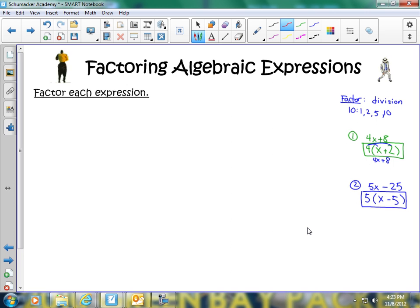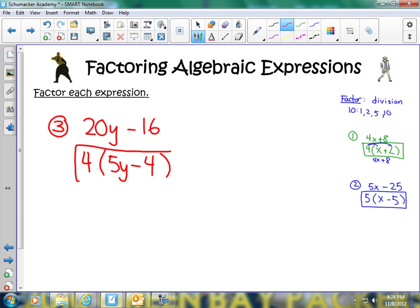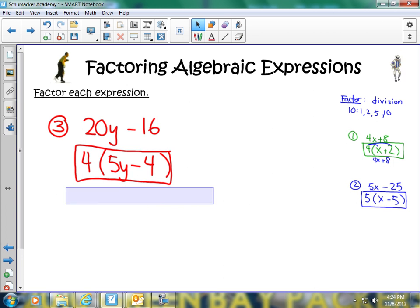Now, what happens when we have a larger coefficient with our variable? For example, let's have 20y minus 16. What we're going to do is find out what is a common factor for both 20 and 16. The greatest common factor would be 4. Even though I can't get y whittled down all the way, it's okay. 20 divided by 4 is 5, and then y, minus 16 divided by 4 is 4. The way you know you're done is you look at the 5y and the 4 and think, is there any other numbers I can factor out? Other than 1, there's nothing. Therefore, this is as simplified as I can get it.